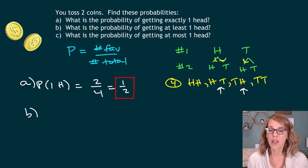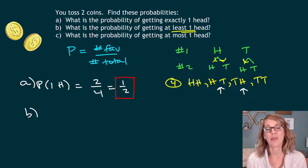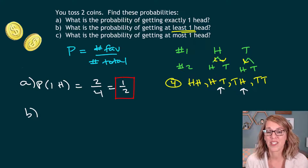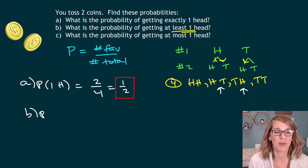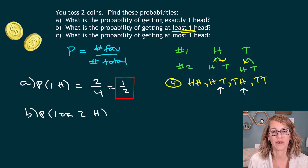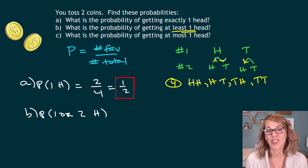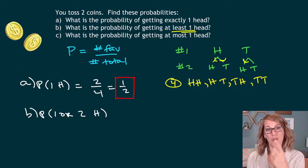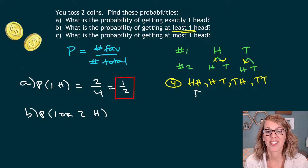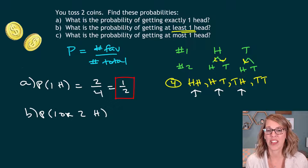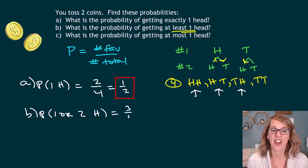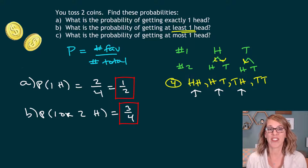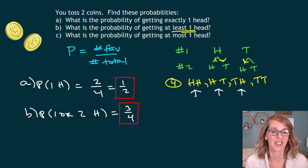Part B: I want to know the probability of getting at least one head. That means one or more — so that's the probability of one head or two heads. Going through my sample space, I choose anything that has two heads or a single head. That gives me three out of four, which you could also represent as 0.75 or 75%.